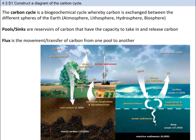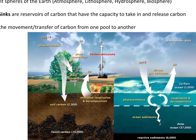The biggest skill that you need to pick up is the ability to construct a diagram of the carbon cycle, labeling both the sinks and the fluxes. The carbon cycle is the biogeochemical cycle, and carbon gets exchanged between the four spheres of the Earth: the atmosphere, lithosphere (the ground and bedrock), hydrosphere (the bodies of water), and the biosphere (living organisms). Pools, or sinks, are reservoirs of carbon that have the capacity to take in and release carbon, and a flux is the movement or transfer of carbon from one pool to another.